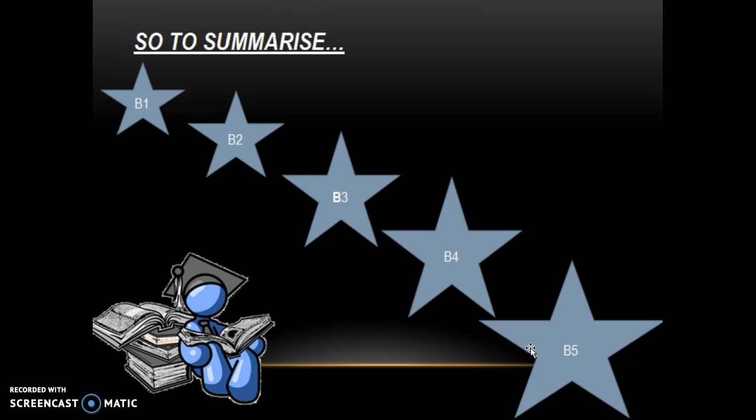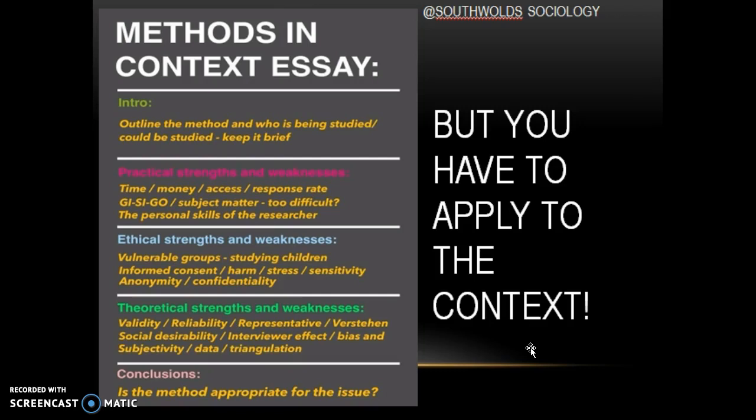To summarise, we've looked at the difference from Band 1 all the way up to Band 5 and how we mark Methods in Context. Every paragraph and every statement is looked at separately — awarded B1, B2, B3, B4, or B5 — and then your answer is judged as a whole based on how many B3s, B4s, and B5s you have, which moves you up the mark scheme. If you're thinking about how to structure your answer, there's a helpful structure guide — I found it via Google Images from Southwold Sociology, so credit to them. It gives you a way to structure your answer if you're struggling. Make sure you're applying to the context in the question: start with your basic strengths and weaknesses and develop those paragraphs all the way to the content asked for in the question.